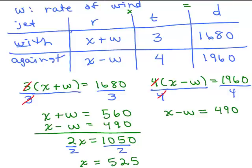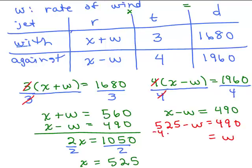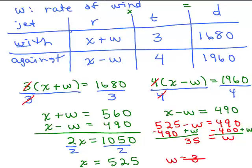X stood for the rate of the jet in still air, so we now know that. We need to find W, the rate of the wind. We can plug 525 into one of the equations — using X minus W equals 490, substitute 525 for X. To solve for W, add W to both sides and subtract 490 from both sides. That gives W equals 35, which is the rate of the wind.